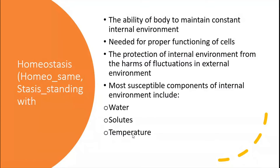We maintain the temperature, we maintain the ions, we maintain the glucose in the body. Each and every process in the body happens at a specific optimum value, which is necessary to complete the proper functioning of the body. For this, we need to optimize and maintain optimum temperature.